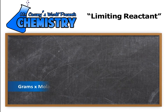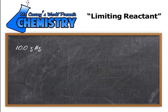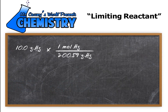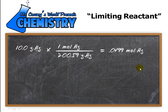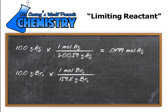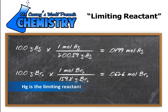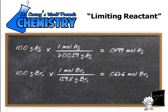Determine the limiting reactant. Grams divided by molar mass equals moles. With that in mind, 10 grams of mercury multiplied by its molar mass from the periodic table gives 0.0499 moles of mercury — using three sig figs. Ten grams of bromine multiplied by the molar mass of Br₂ — remember, bromine is diatomic, so you double it — gives 0.0626 moles of bromine. That means mercury is the limiting reactant, because we'll run out of mercury before we run out of bromine.